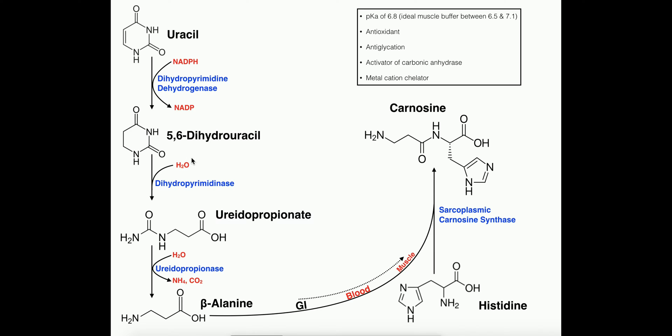Dihydrouracil is going to be degraded further by a hydrolytic enzyme called dihydropyrimidinase. Water comes in and it's ultimately going to bust up this molecule, decyclize it into this molecule called ureidopropionic acid or ureidopropionate.